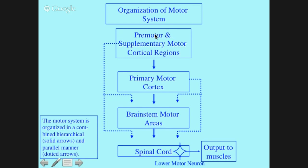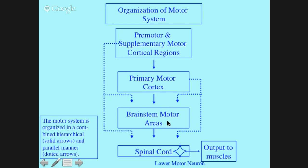The hierarchy goes from premotor and supplementary down to primary to brainstem to spinal cord, with parallel circuits by which projections from premotor and supplementary can go directly to the spinal cord or bypass motor cortex. The output from the primary motor cortex is especially involved in control of distal muscles — your ability to fractionate finger movements. A lot of proximal muscle activity is really driven by centers in the brainstem that are under cortical control.